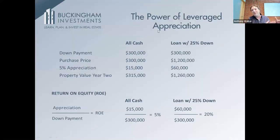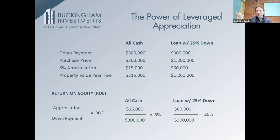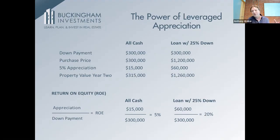I showed you a time value money chart that starts at 20%. So what gives? If you've got cash flow 3% to 5%, appreciation at 6.4%, principal pay down, amortization is probably 5%, tax shelter benefits another 3% to 5% — that doesn't really get you to 20% to 30%.